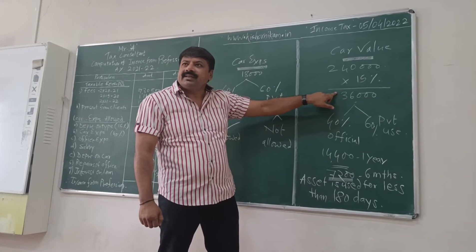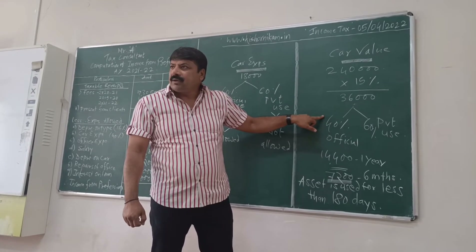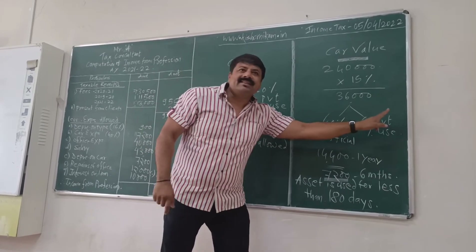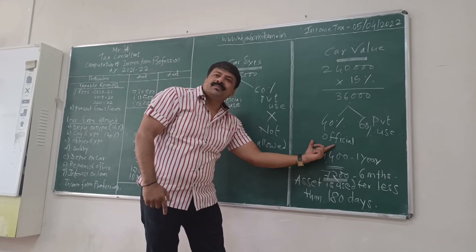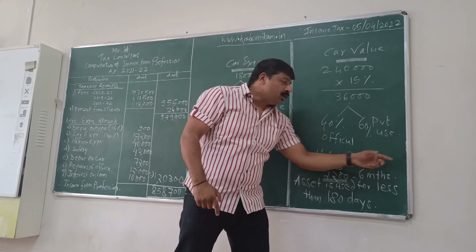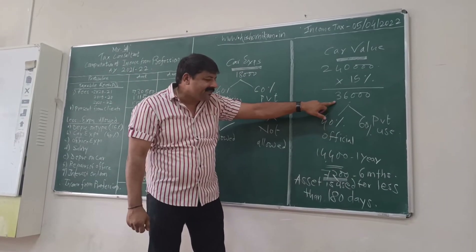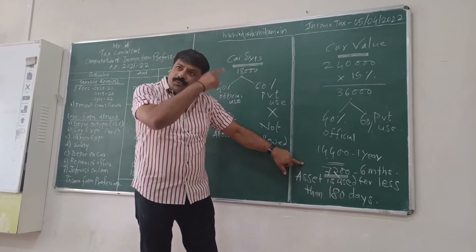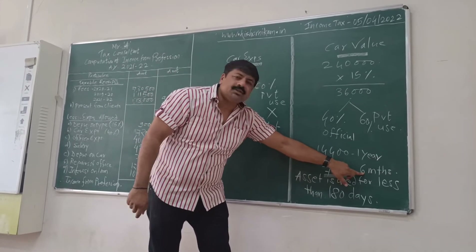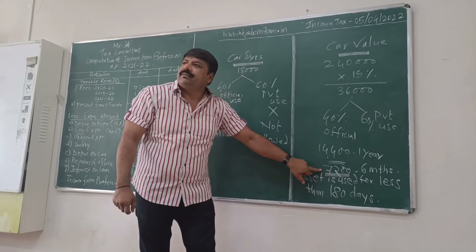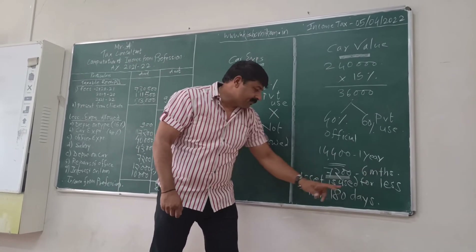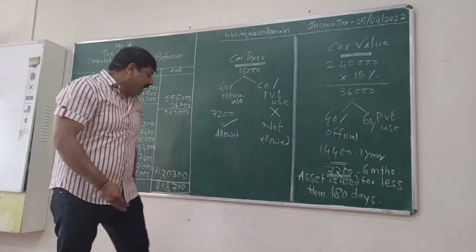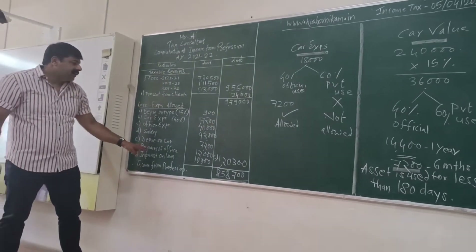So 2,040,000 into 15% — depreciation is 36,000. But again, 40% official use and 60% private use; private use is not allowed. So 40% of 36,000 equals 14,400. For the full year it is 14,400, but for 6 months — since the asset is used for less than 180 days — it is 7,200. So depreciation on car is 7,200.